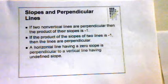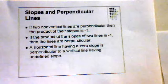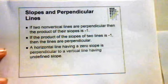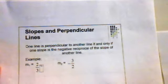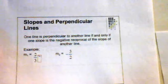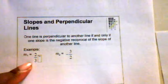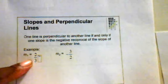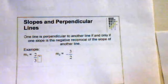If two non-vertical lines are perpendicular, then the product of their slopes is negative 1. And the converse: if the product of the slopes of two lines is negative 1, then the lines are perpendicular. A horizontal line having a zero slope is perpendicular to a vertical line having undefined slope. One slope is the negative reciprocal of the other — like if you have the slope two-thirds, the negative reciprocal is negative 3 over 2.